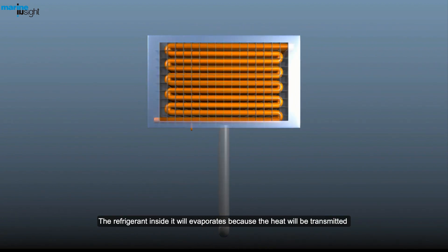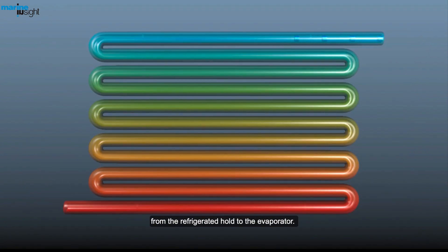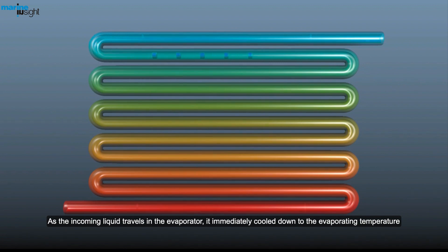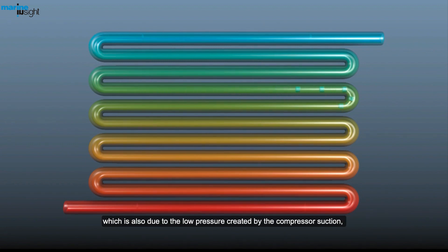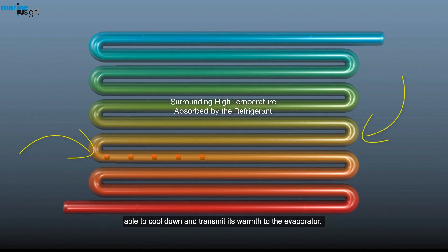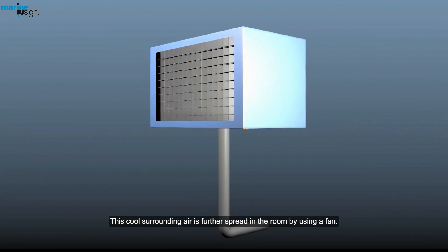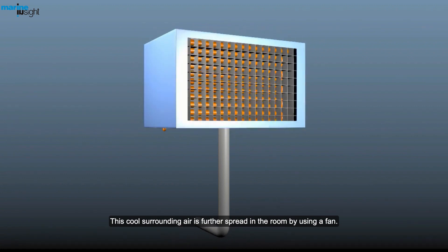The refrigerant inside it will evaporate because the heat will be transmitted from the refrigerated hold to the evaporator. As the incoming liquid travels in the evaporator, it immediately cools down to the evaporating temperature, which is also due to low pressure created by the compressor suction. With the result that the surrounding air from the hold at a higher temperature is able to cool down and transmit its warmth to the evaporator. This cool surrounding air is further spread in the room by using a fan.